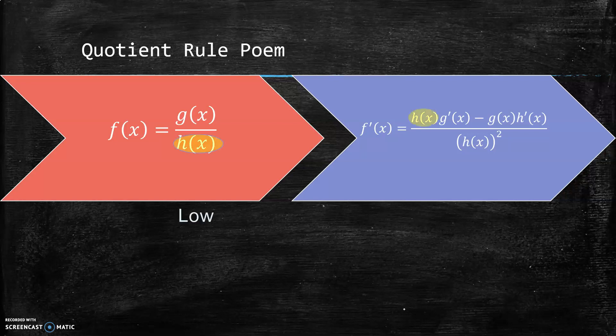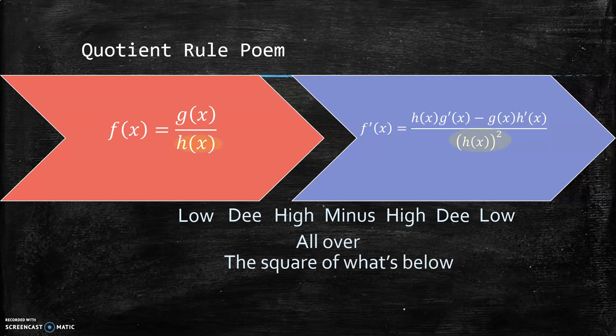The poem says: low (short for denominator) D (short for derivative) high (short for numerator) minus high D low, all over the square of what's below, and away we go.